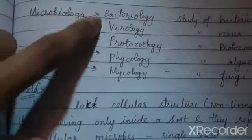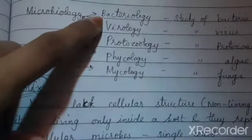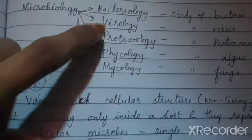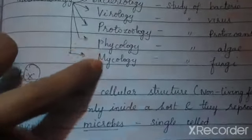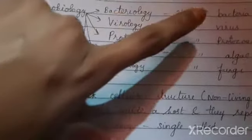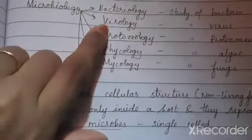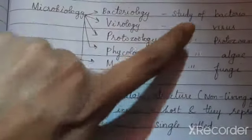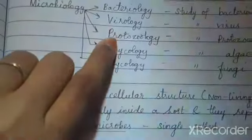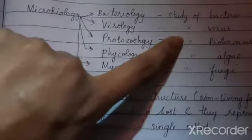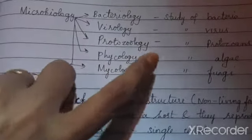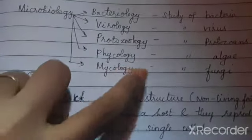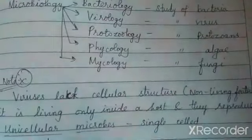Microbiology is again classified into five: bacteriology, virology, protozoology, phycology, and mycology. Bacteriology is the study of bacteria. Virology is the study of viruses. Protozoology is the study of protozoans. Phycology is the study of algae. Mycology is the study of fungi.